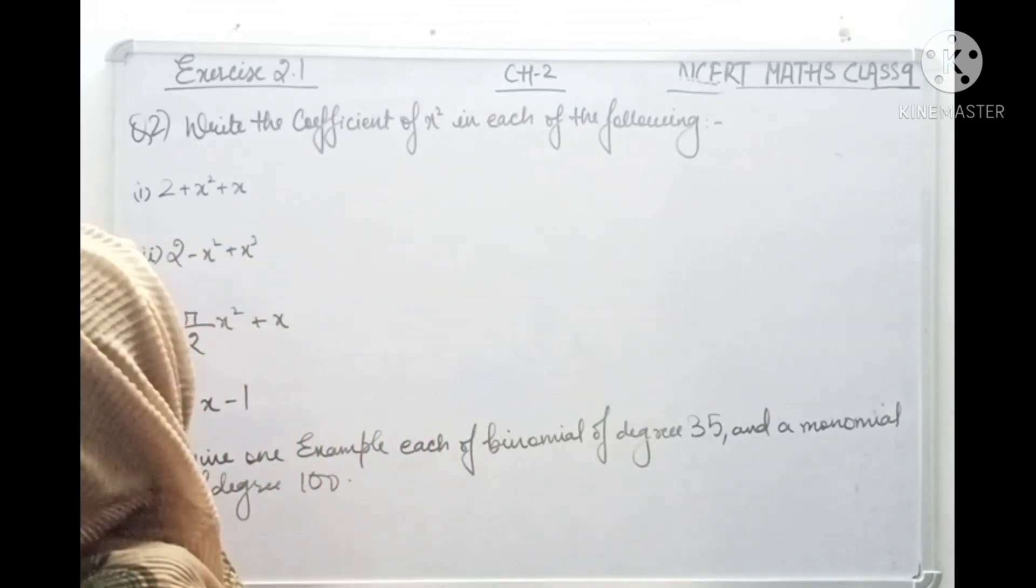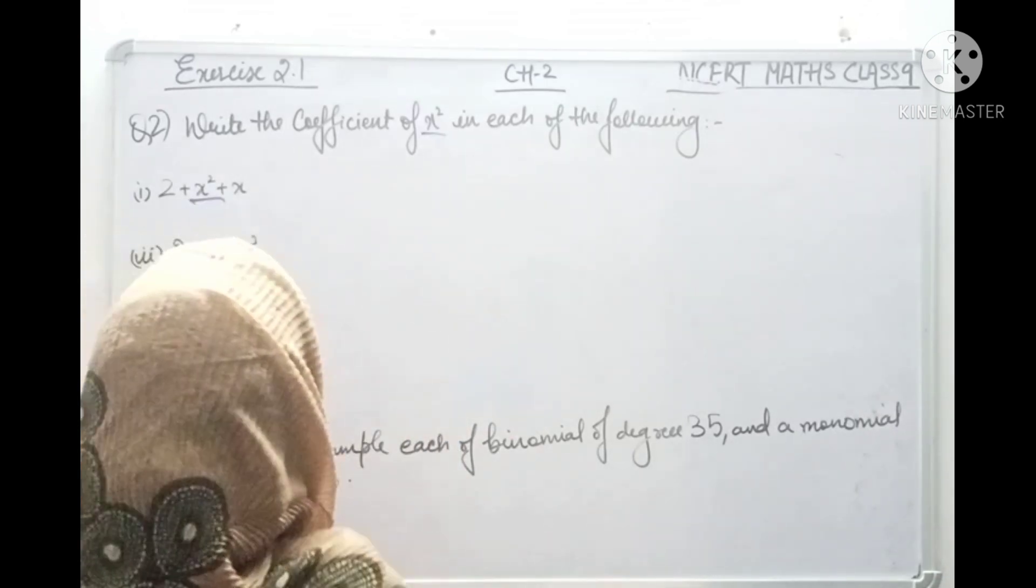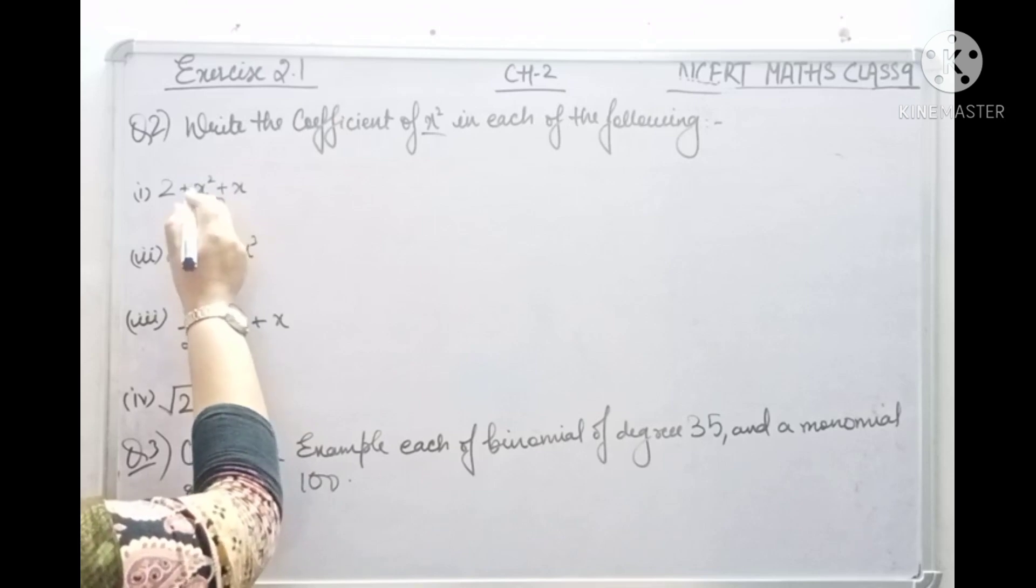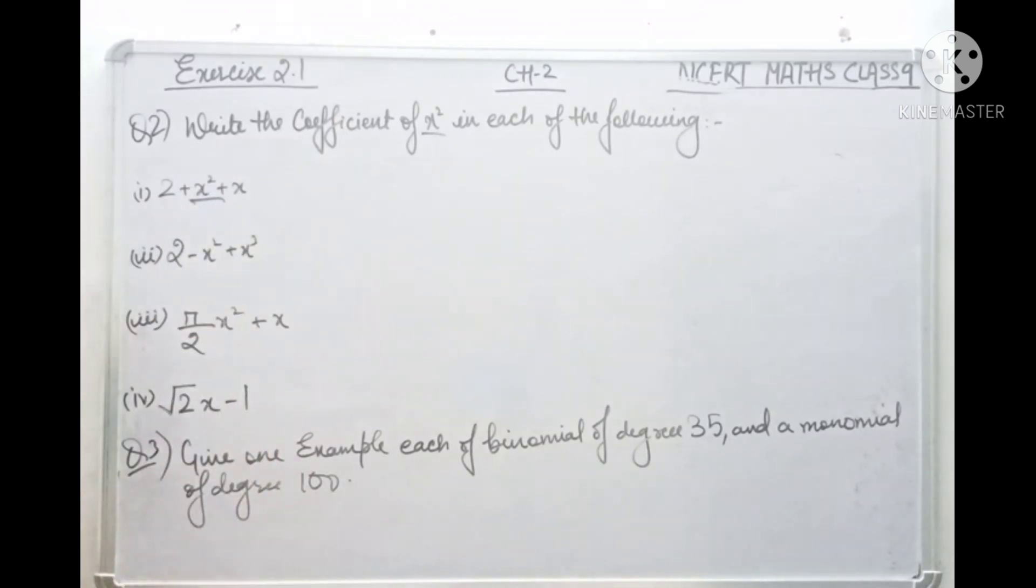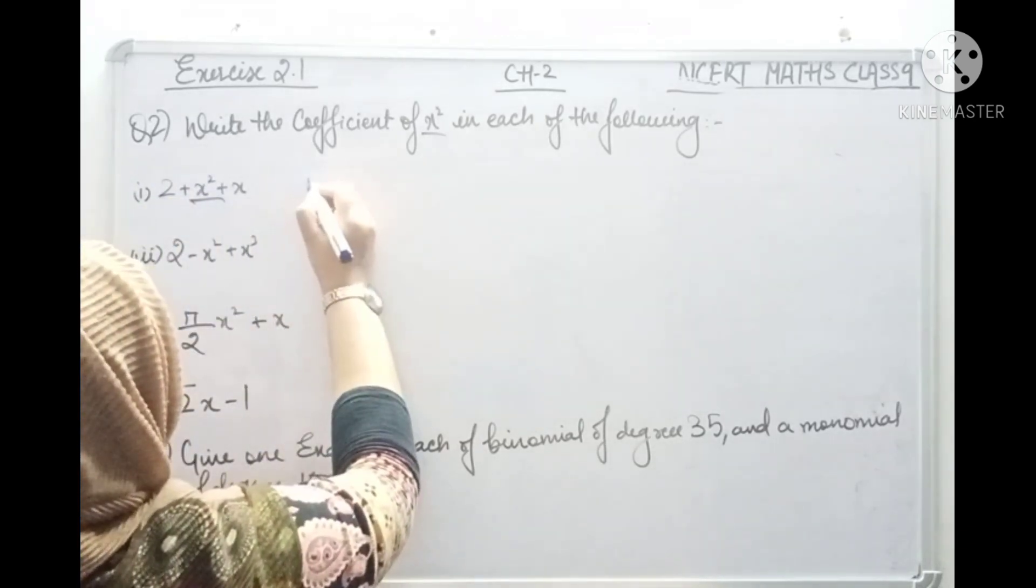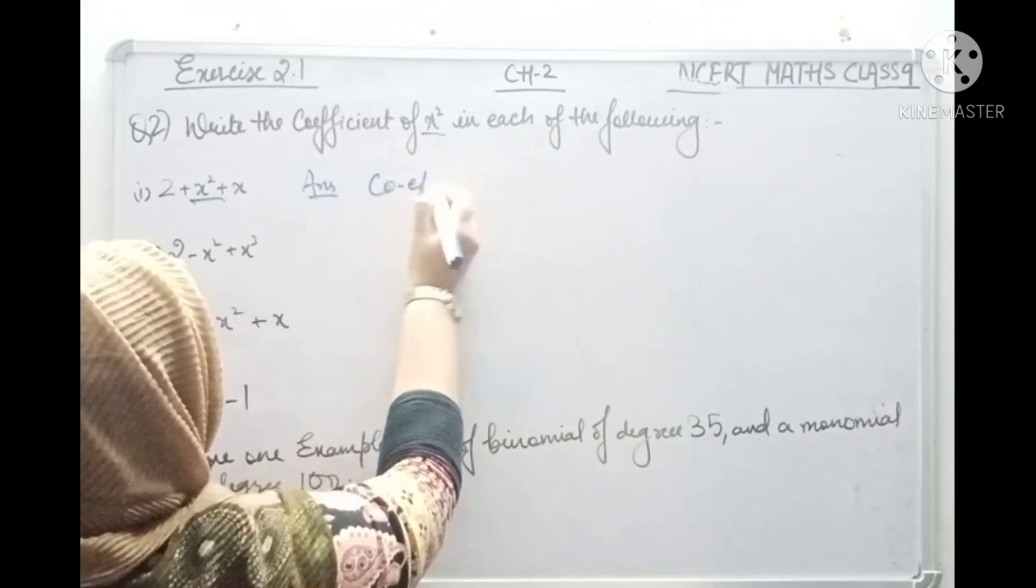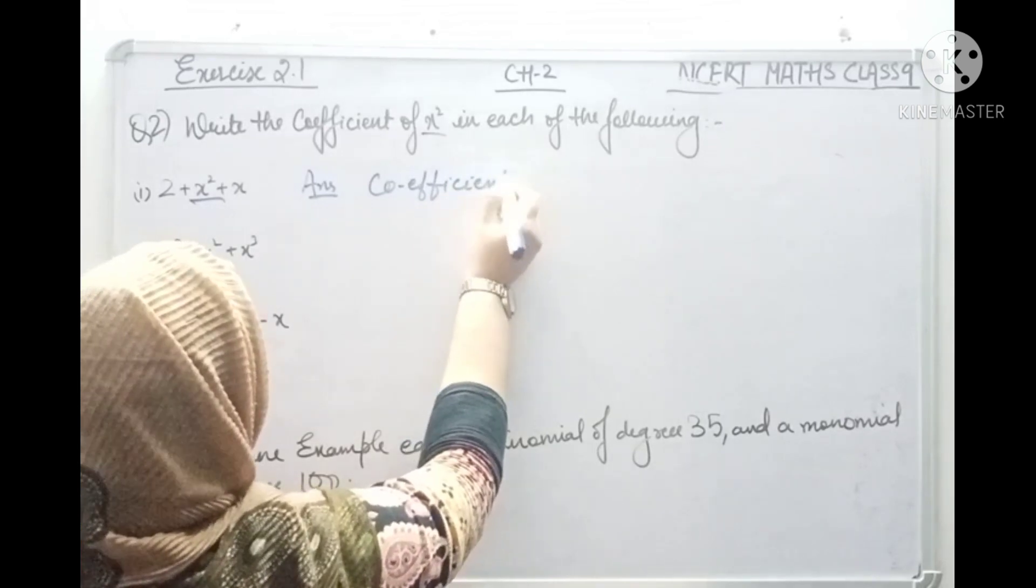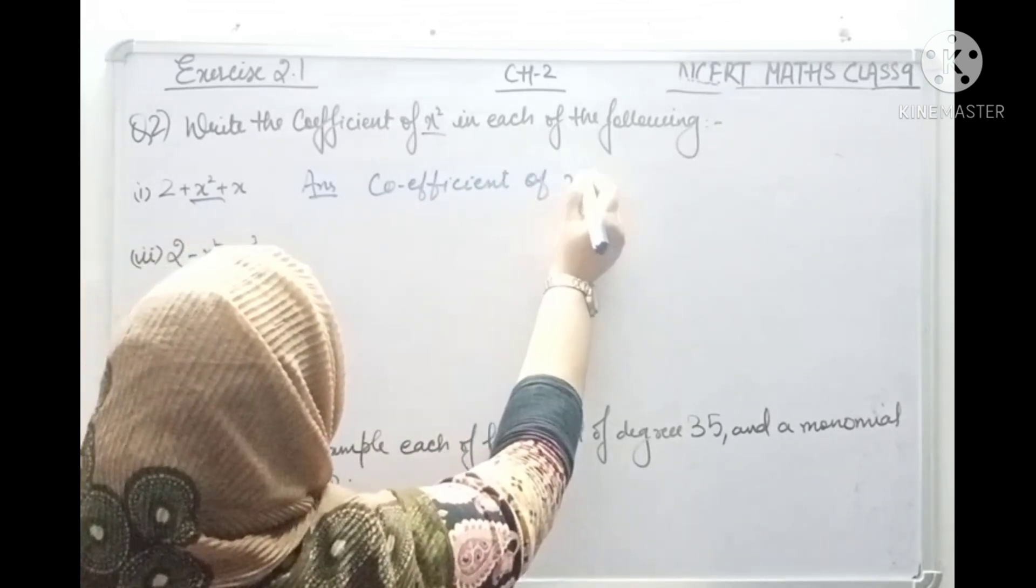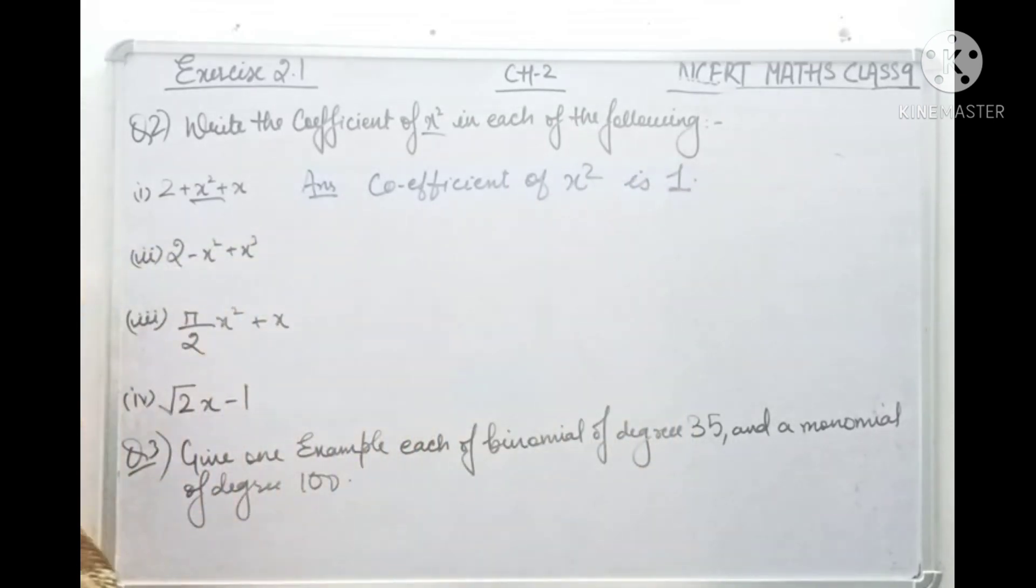So here, coefficient of x square. First of all, let's see what is x square. What is the coefficient of x square? x square is multiplied by 1. The answer is coefficient of x square is 1, because x square is multiplied by 1.